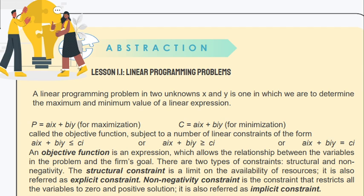In the minimization problem, the objective function is denoted as C = aix + biy for minimization. In maximization it's denoted by P, and minimization denoted by C. The symbol you will use is aix + biy greater than or equal to ci. In maximization it's less than or equal, in minimization it's greater than or equal.